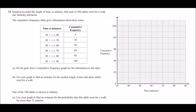Number 13: Sandeep recorded the length of time in minutes that each of 100 adults went for a walk one Saturday afternoon. The cumulative frequency table gives information about these times. Key note: cumulative frequency means you're adding up the frequencies as you go along — but here it's already done for you. Part a asks us to draw a cumulative frequency graph.